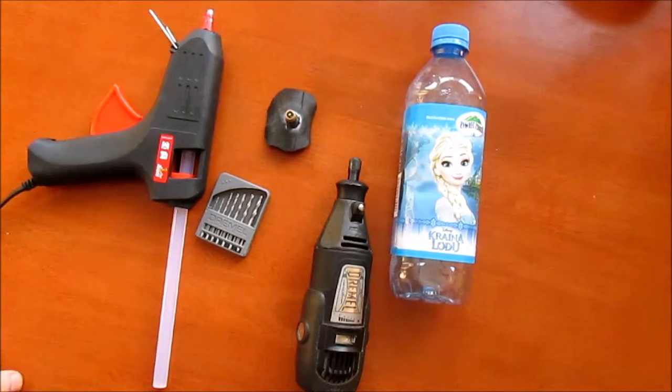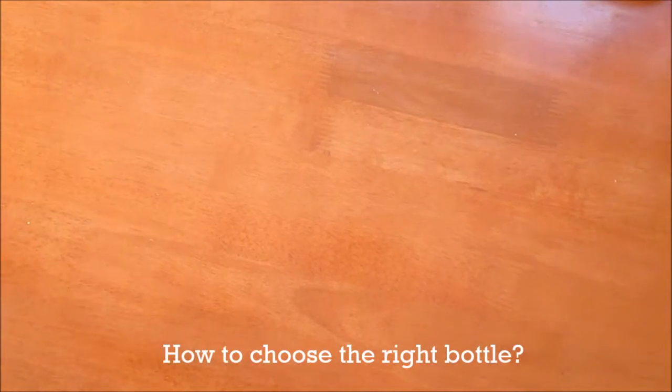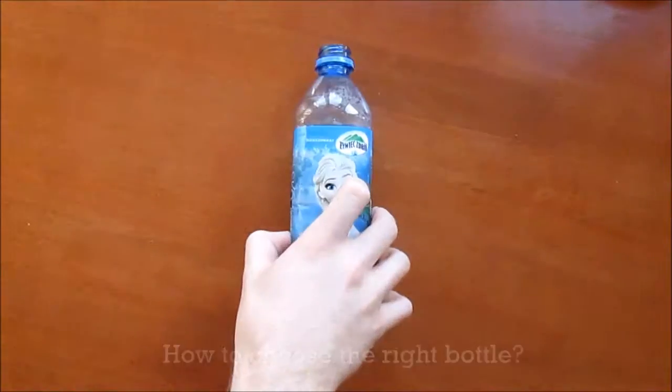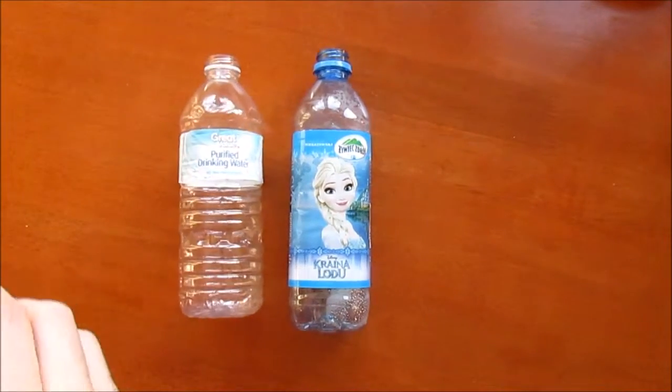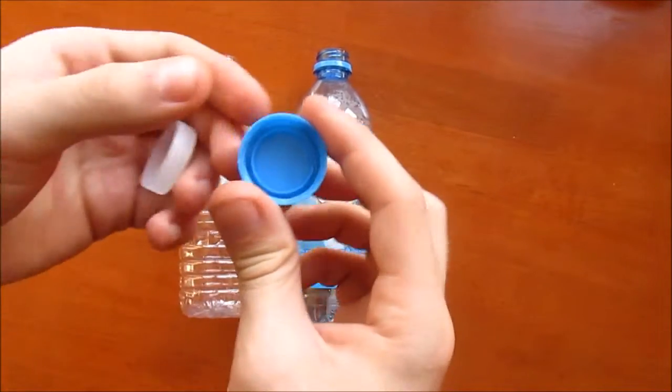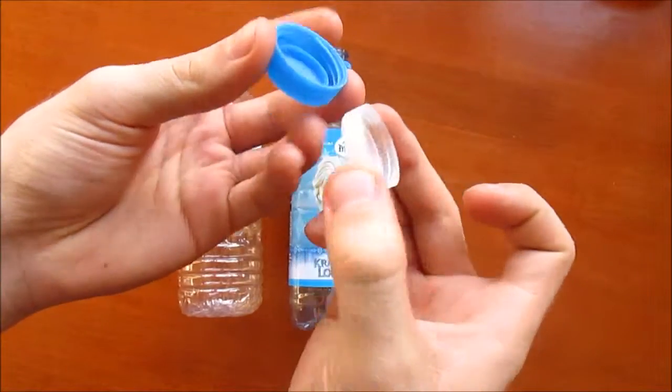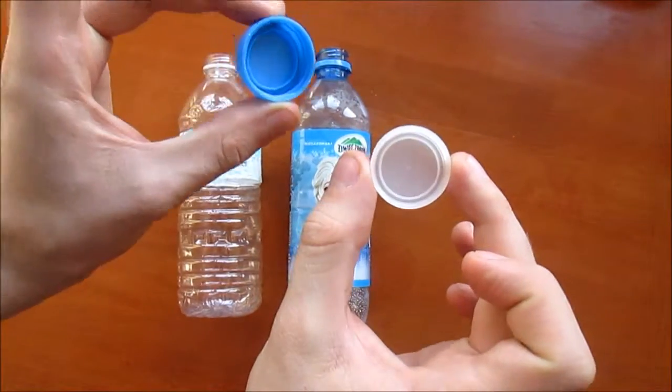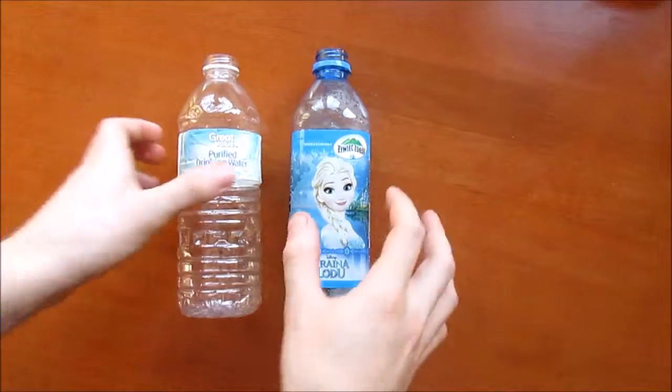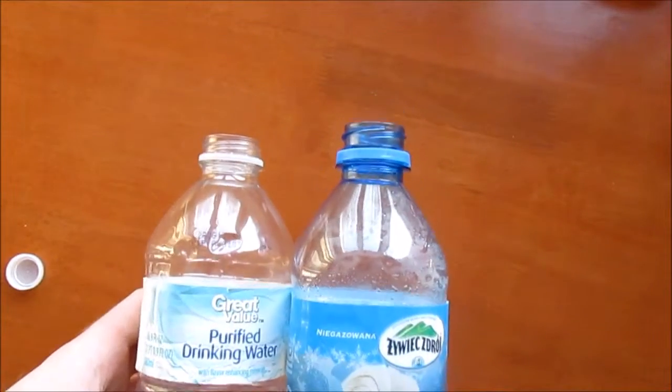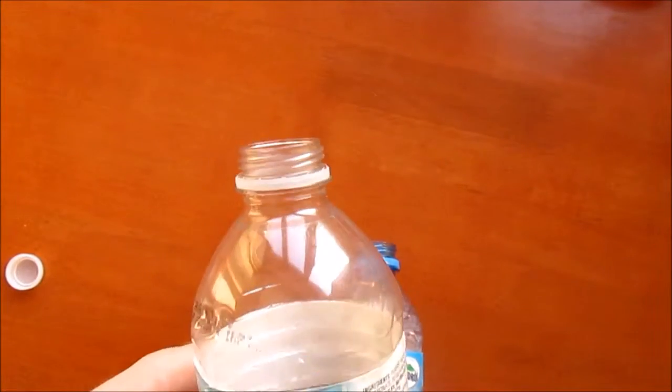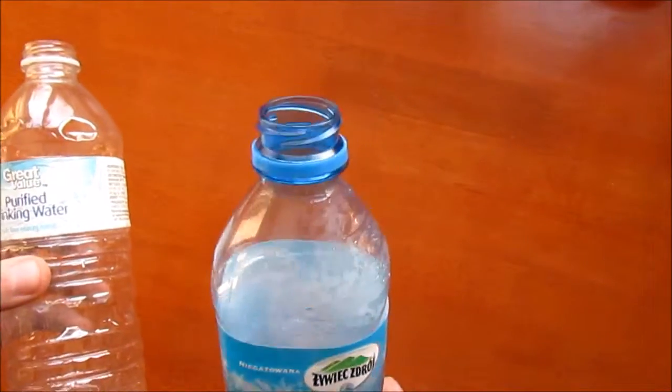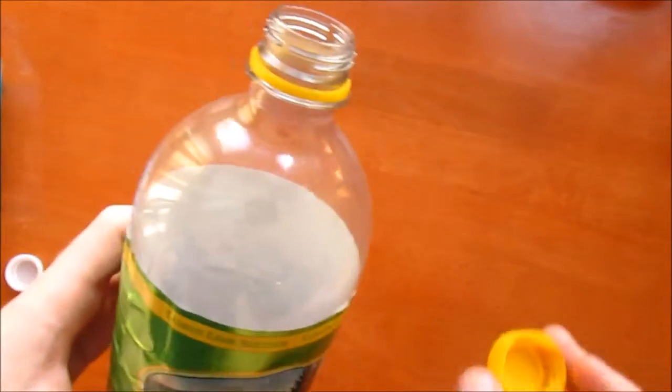In order for your bottle blaster to work effectively and efficiently, you're going to need to choose the correct bottle. Not all bottles will work correctly for this project. First, take a look at the threads on each cap. Both of these caps will work for the project as the threads are shaped upwards at approximately a 45-degree angle. This allows the cap to fly off smoothly and quickly without releasing air at a slow rate.